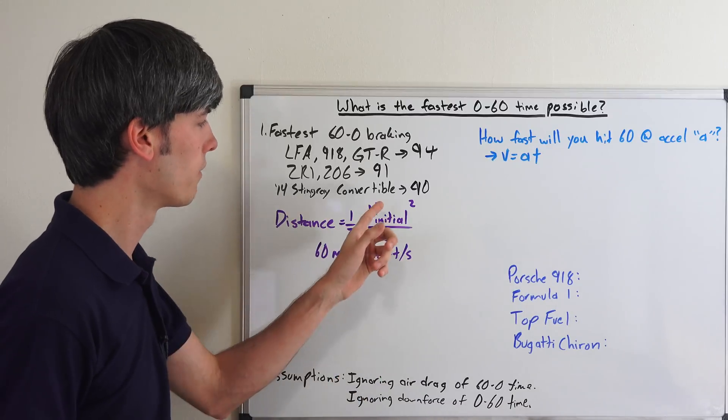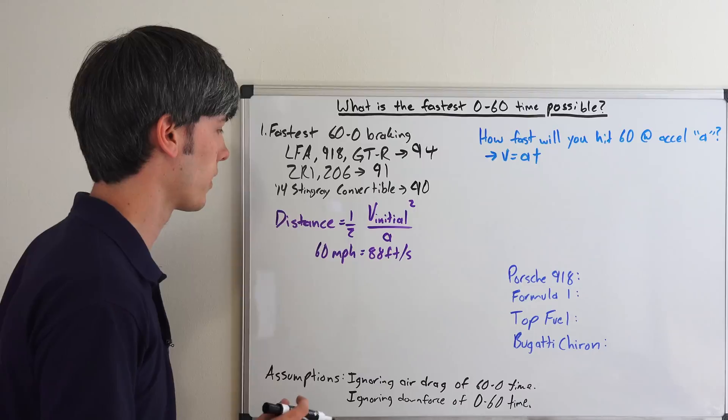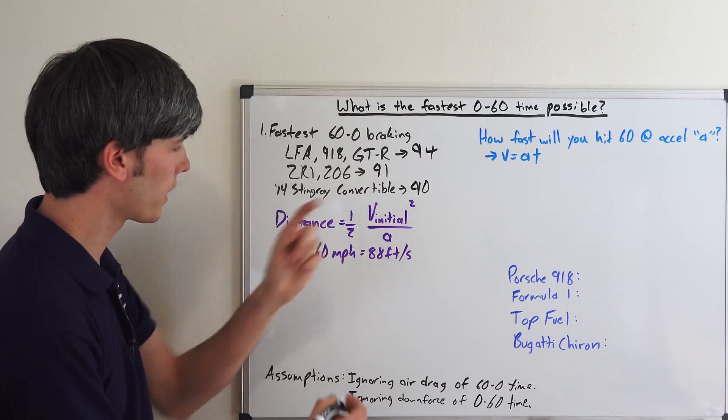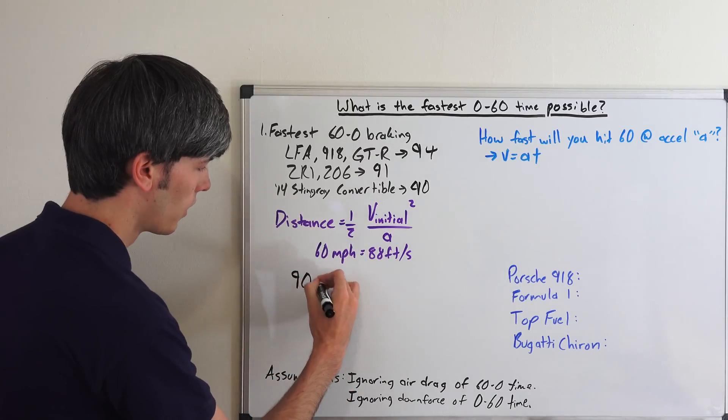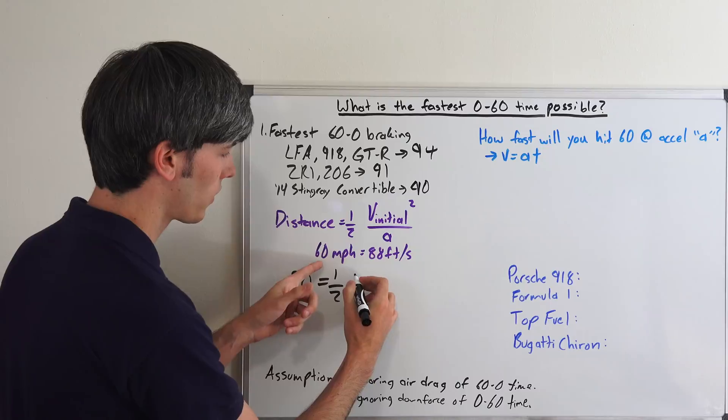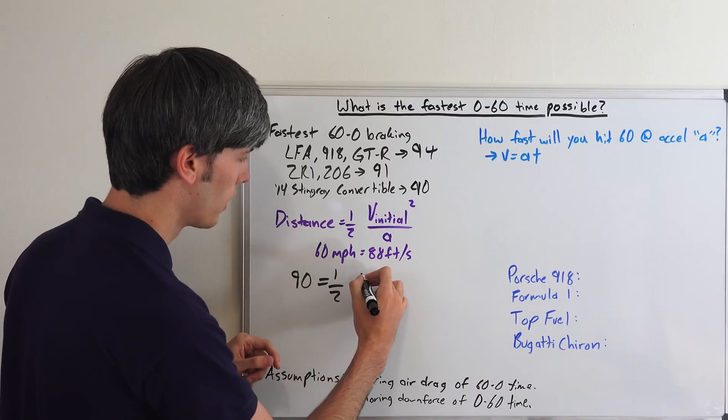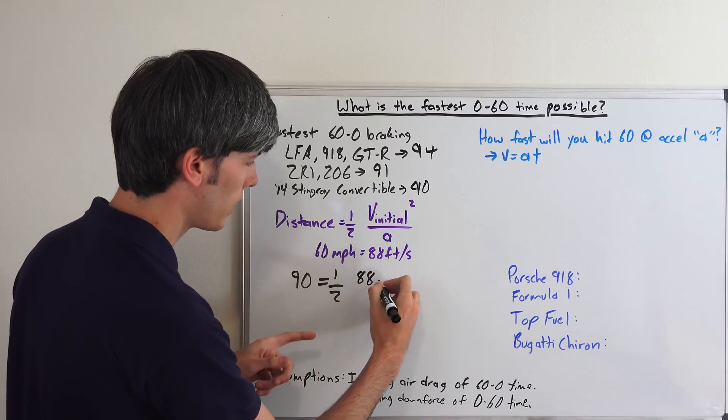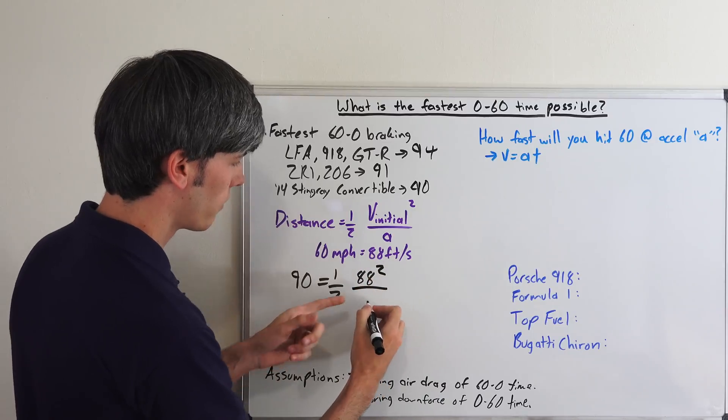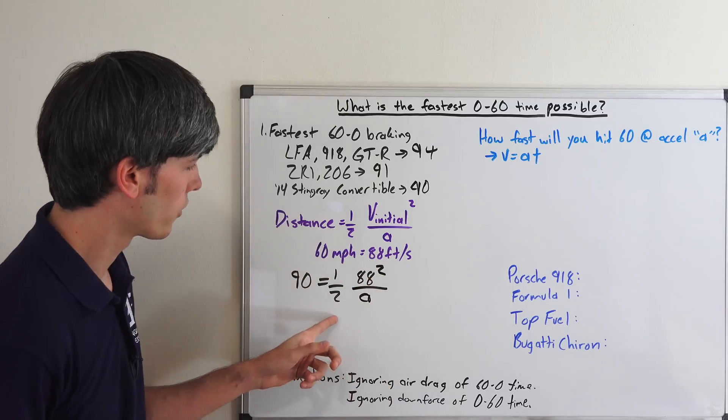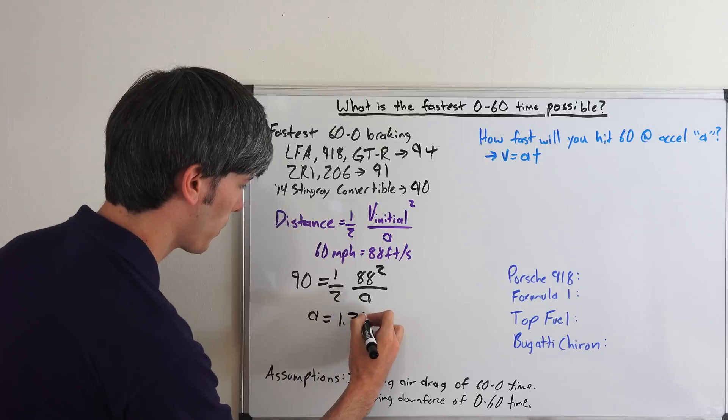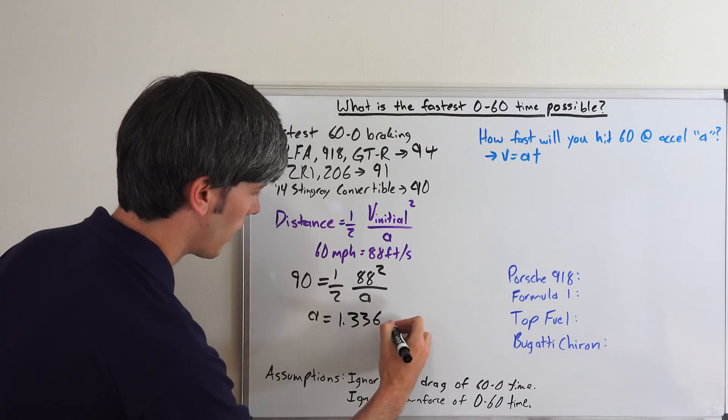Distance equals one-half velocity squared divided by acceleration. So, this is your initial velocity. We know that our braking distance is 90 feet. So, we've got 90. We're going to set that equal to one-half our initial velocity, which is 60 miles per hour, but we want it in feet, so we can keep units consistent. So, 88 feet per second. That's our conversion. That's going to be squared, divided by acceleration. And so, you can solve for a, and that will give you 1.336 g's.